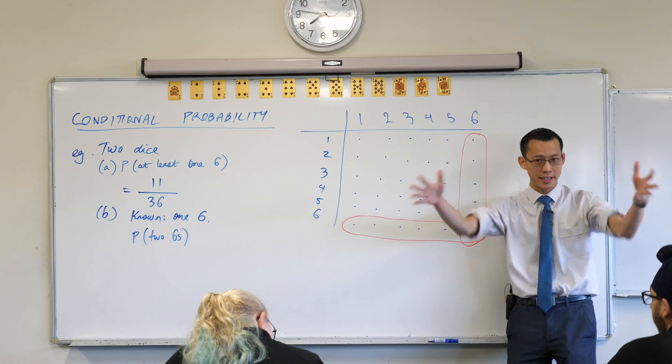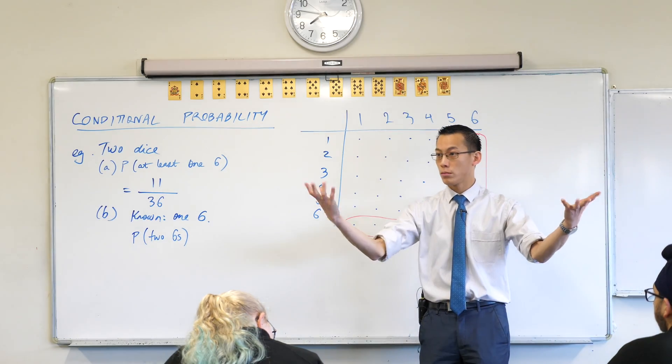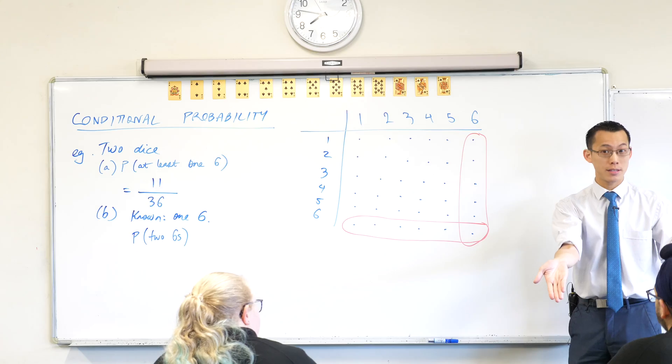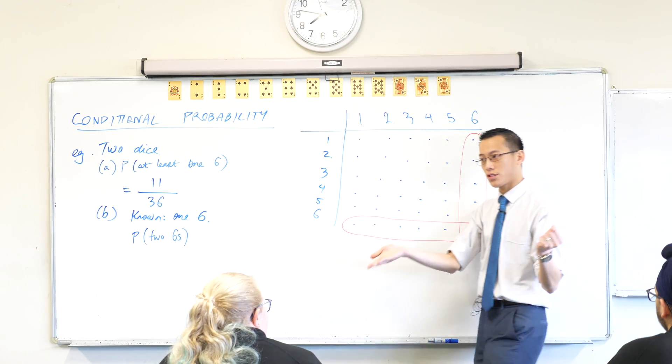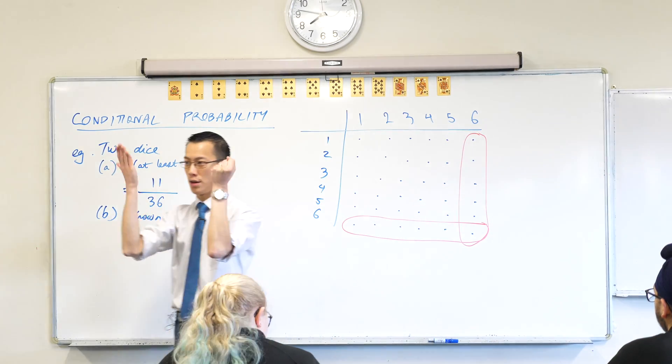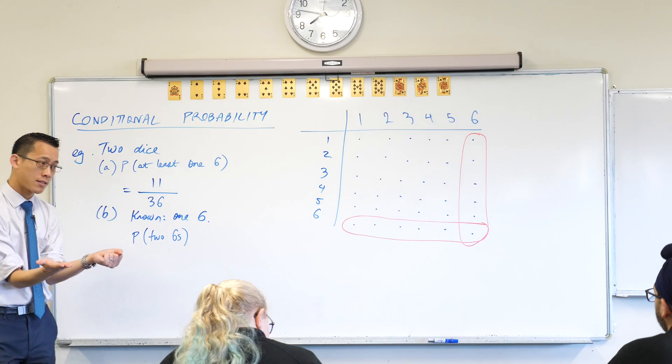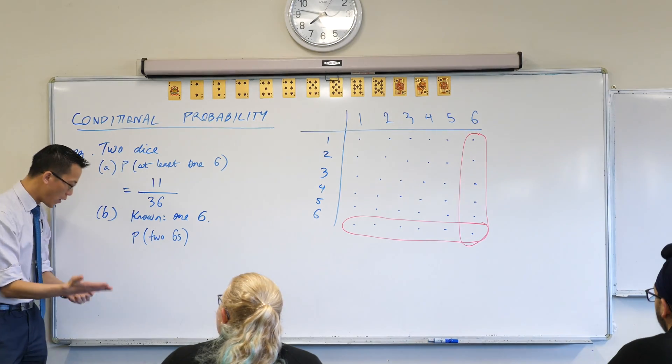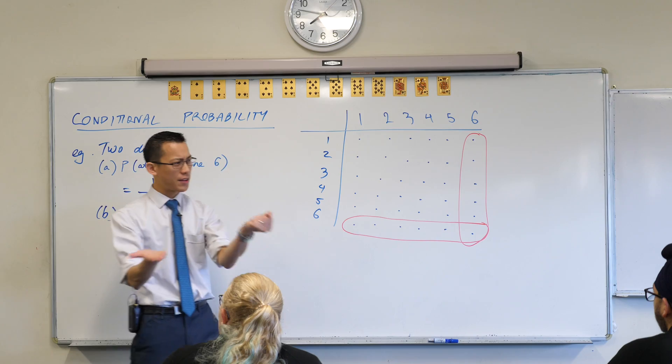I've got the two dice rolled, shaken up, I show you one of them and I say, hey look, this one's a six. What do you think is the chance that they are both sixes? Have a think. What do you reckon, Lizzie? One out of six.